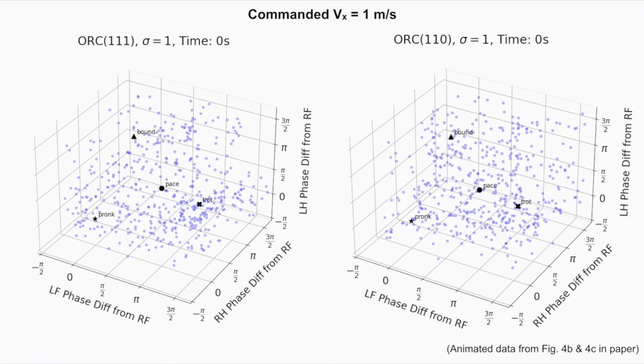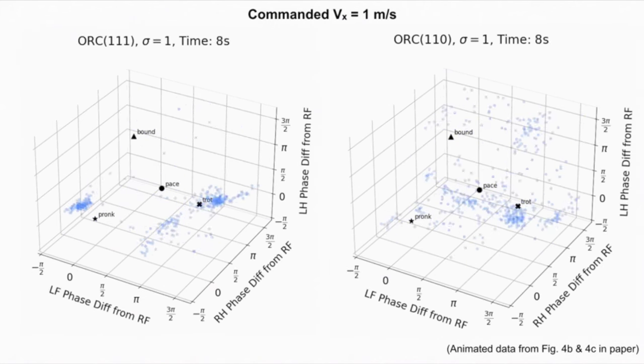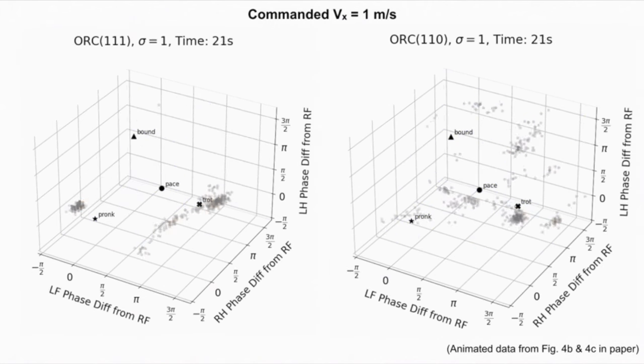When we turn coupling on, the oscillator dynamics makes some gaits more attractive, and we see convergence patterns in both ORC110 and ORC111. The convergence to preferred gaits is faster and more concentrated when the policy is trained with coupling than without.